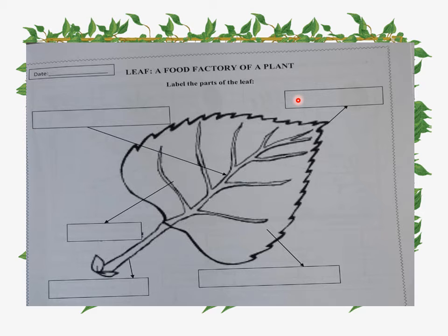But in this box we will write tip of the leaf or apex. In this third box we will write about the side vein, it is side vein.